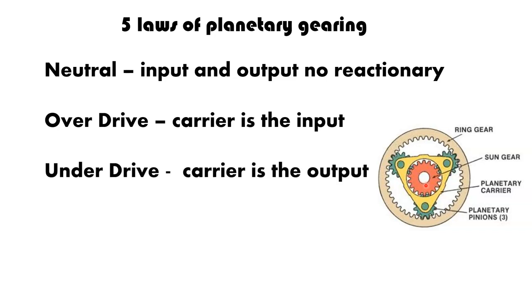In your underdrive, your carrier is always the output. Again, your input can be the ring. Your input can be the sun. So you've got two different underdrive conditions. And this is, again, underdrive. You've got a higher RPM and a lower RPM coming out. Higher RPM coming in, lower RPM coming out.